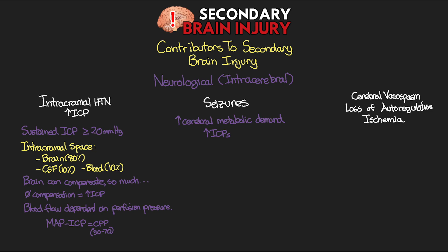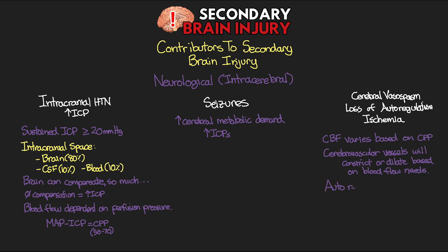Cerebral blood flow varies based on changes in cerebral perfusion, and part of our compensation mechanism is that cerebrovascular vessels constrict or dilate based on the needs of blood flow. We also have autoregulation of cerebral blood flow working to maintain homeostasis through multiple compensatory mechanisms. Vasospasm causes unnecessary constriction of blood vessels, restricting blood flow available for perfusion. Loss of autoregulation means we can't ensure the brain is getting proper perfusion. Both can ultimately lead to ischemia, which leads to more cell death.